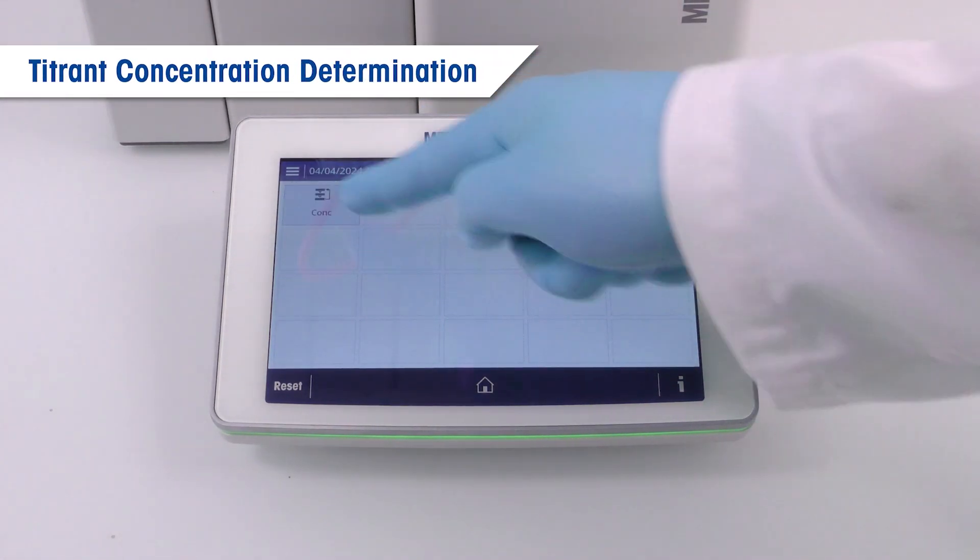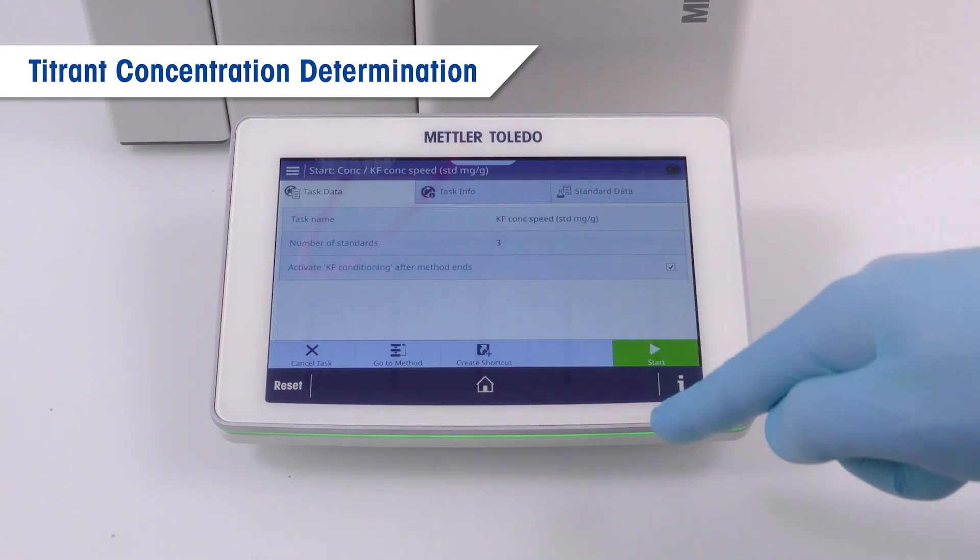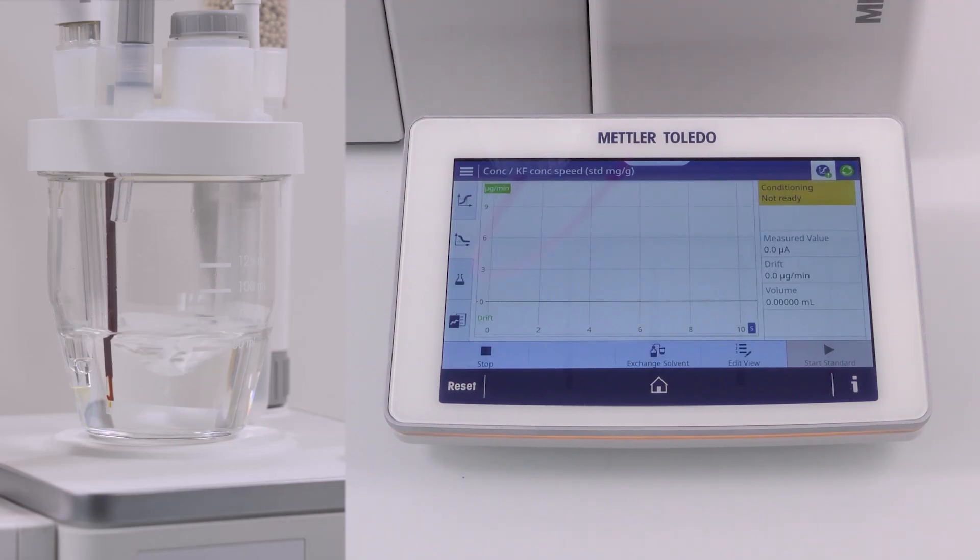We start with the actual concentration determination. Enter the number of certified standards that you want to measure and start a task via the shortcut. After the cell is conditioned and the start button turns green, the system is ready to receive samples.